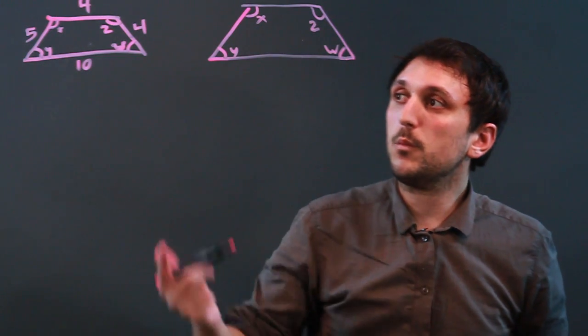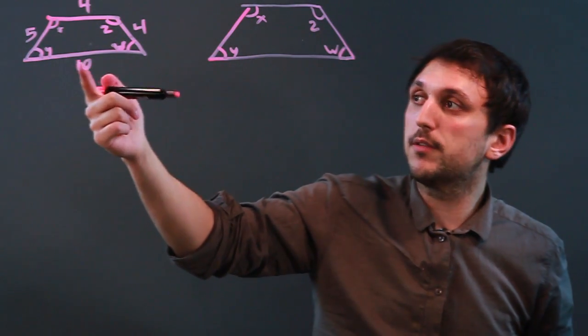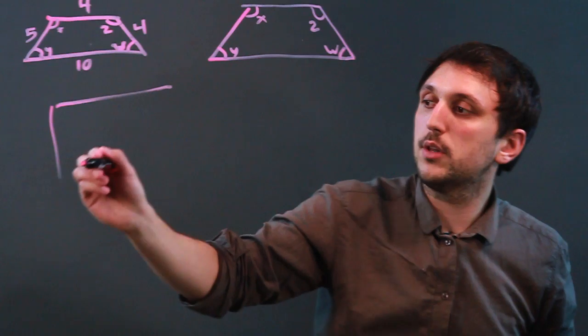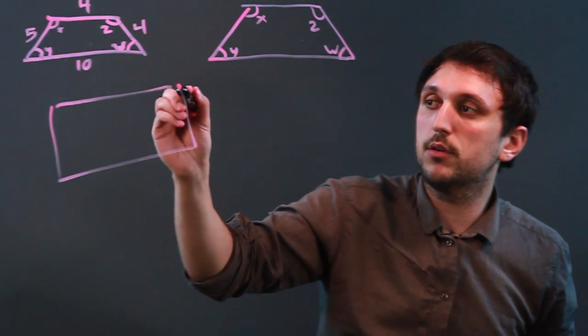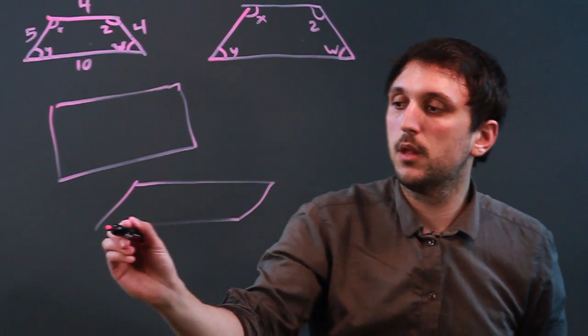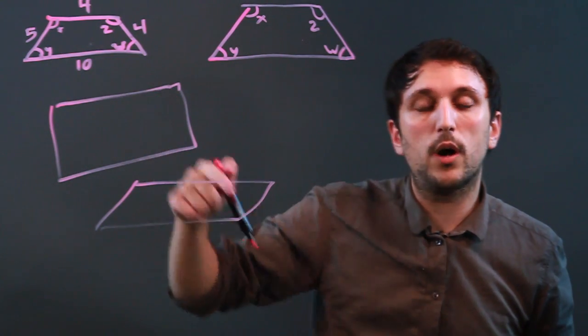Now, another way we could think about similar to a trapezoid would be saying, well, a trapezoid is a quadrilateral, so any quadrilateral, be it a rectangle or a parallelogram, is similar to a trapezoid in that they are all quadrilaterals.